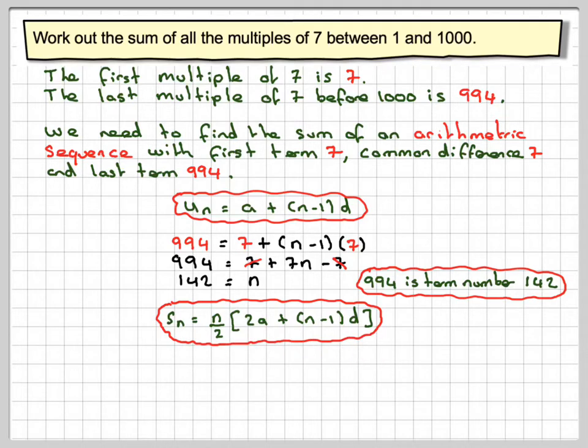Now fortunately the sum formula is in IGCSE on the formula on the front page, so Sn is equal to n over 2, 2a plus n minus 1 times d. So the sum of 142 will be 142 divided by 2, 2 times 7 plus 142 minus 1 times the common difference of 7.